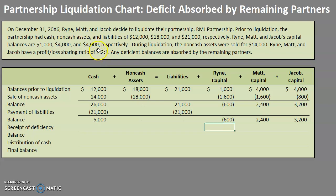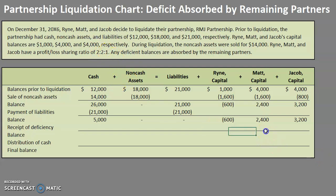Ryan's ratio was two — we ignore that for now. We only focus on the partners who are absorbing, which is Matt and Jacob, giving us a 2 to 1 ratio — three parts total. Matt is going to absorb 2 thirds of the $600 deficit, and Jacob is going to absorb 1 third of the $600 deficit.